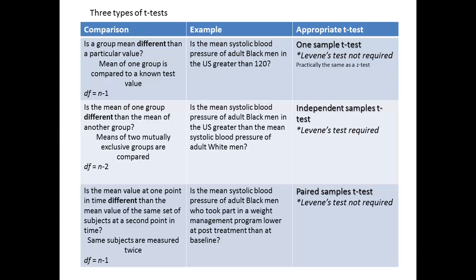There are three types of t-tests. The first is the one sample t, where you measure a group mean against a test value. For example, is the mean systolic blood pressure of adult Black men in the United States greater than 120? The degrees of freedom is the number of individuals in the group minus one. The second type is the independent samples t-test, where you take the mean of one group for a particular variable and ask, is it different from the mean of another group? Since we're looking at two different groups, the degrees of freedom is n minus two. An example: is the mean systolic blood pressure of adult Black men greater than that of adult White men in the United States?